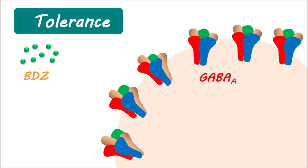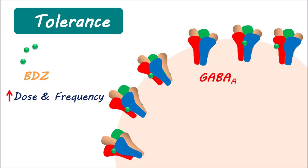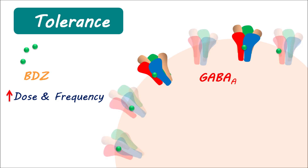Let's talk about the tolerance produced by benzodiazepines. Tolerance is a reduction in the pharmacological response when a particular drug is used frequently. Generally, benzodiazepines act on GABA-A receptors, resulting in the opening of chloride channels that produce an inhibitory response. If these receptors are not working properly or become desensitized, then tolerance will develop. With enhanced dose and frequency of administration, GABA-A receptors are frequently activated, which may result in the desensitization or down-regulation of some GABA-A receptors, leading to a reduced pharmacological response. Notably, tolerance to benzodiazepine anticonvulsant activity is more commonly observed.